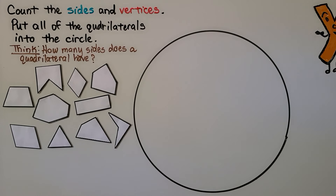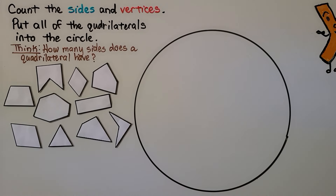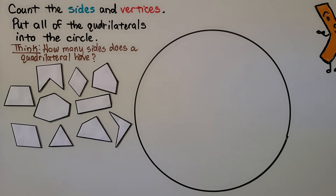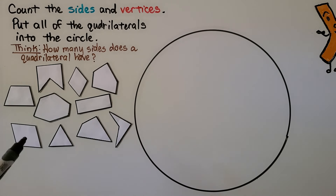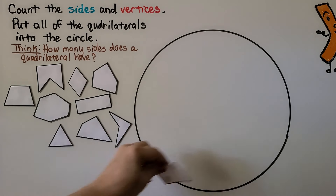This is telling us to count the sides and vertices of these shapes and put all of the quadrilaterals into this circle. We think: how many sides does a quadrilateral have? If you said four, you're right. We need to find shapes that have four sides and four vertices. I see this one right away — it's got one, two, three, four sides. So we know this one's a quadrilateral and we can put it inside the circle.